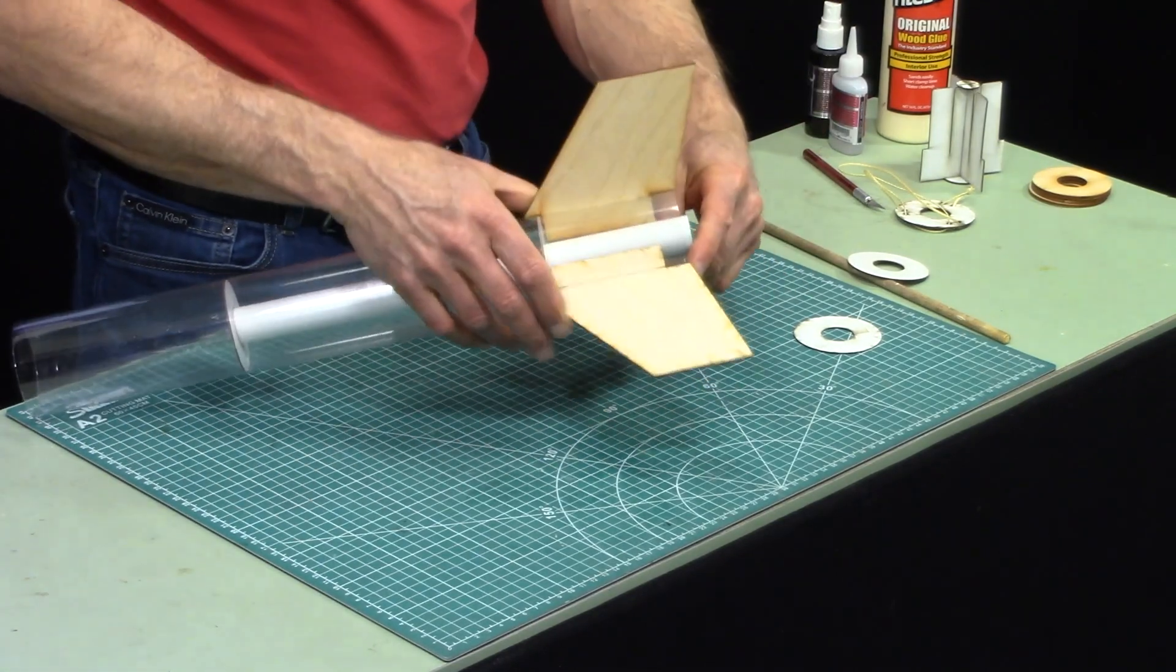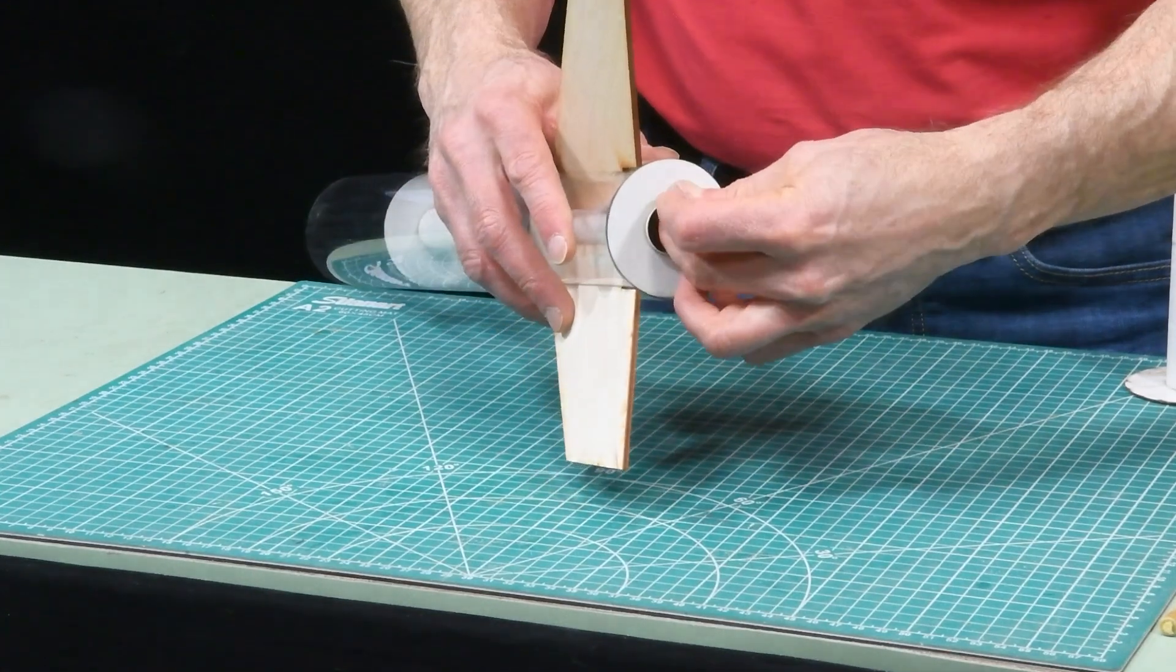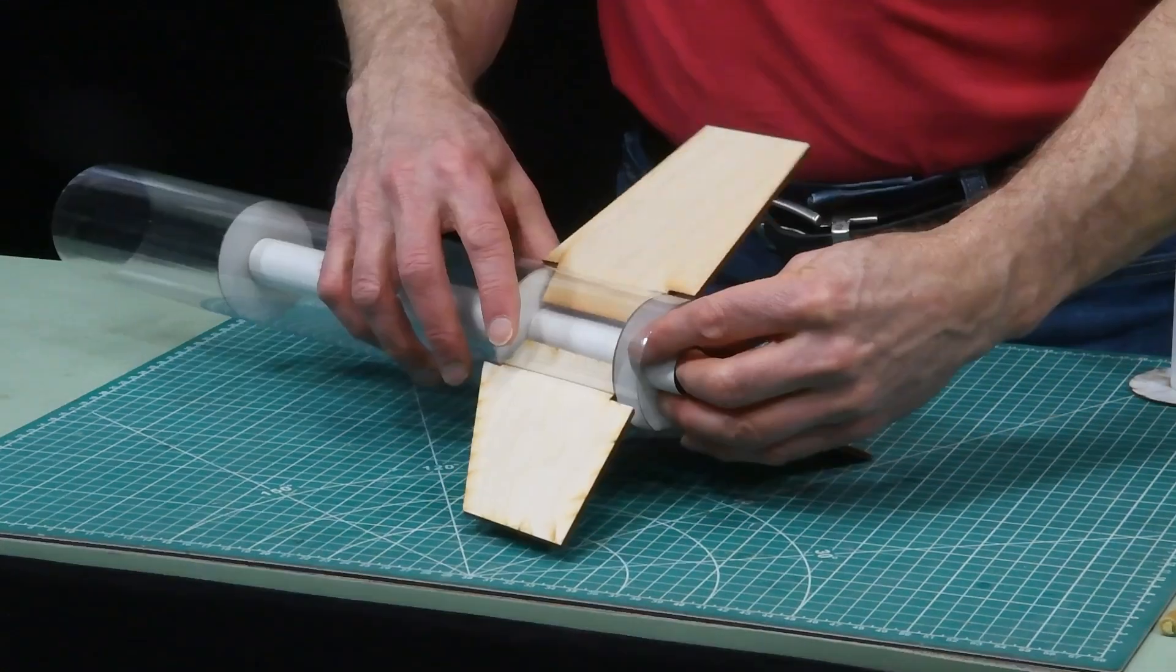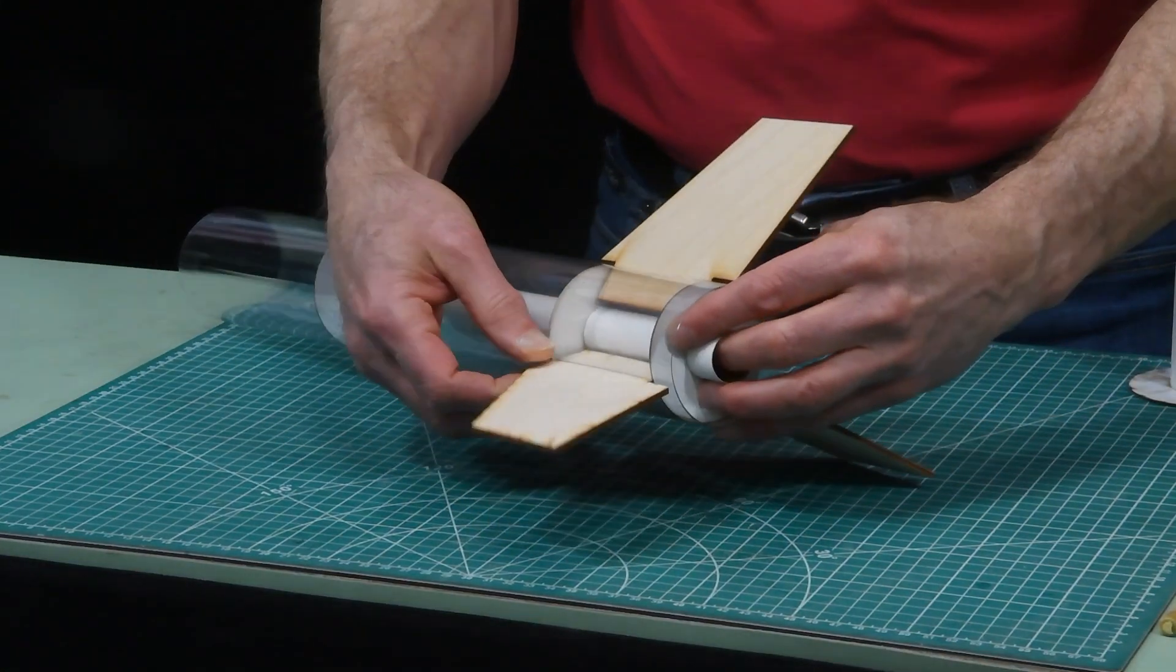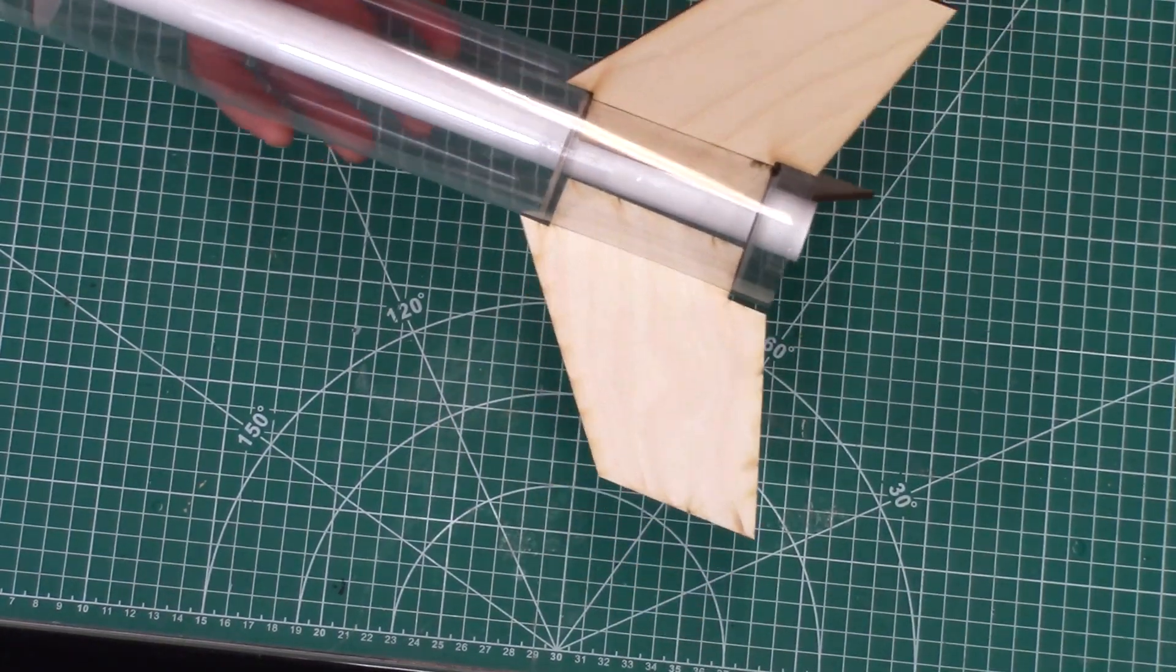Once you get them all in there nice and straight then you can come back and put the third ring on the back end and then just push it up against the back edge of the tabs on the fins just like that and that works really good.